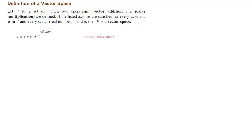One of the axioms is addition. If you add two vectors, the result is closed under addition — meaning the sum of those two vectors is also in V. It is also commutative: u plus v is the same as v plus u, with no difference between them.